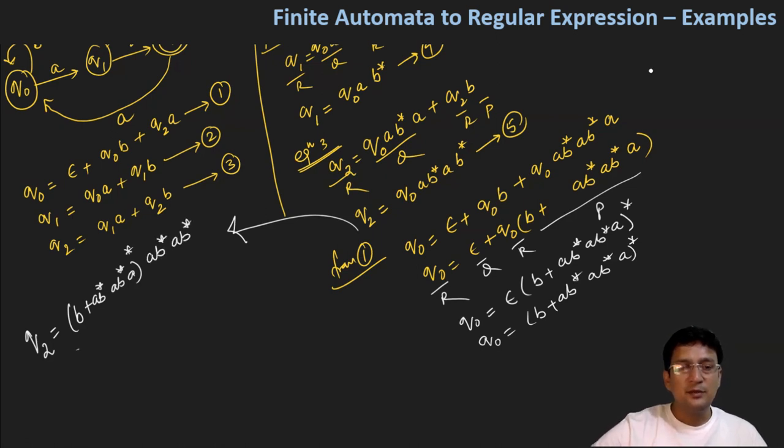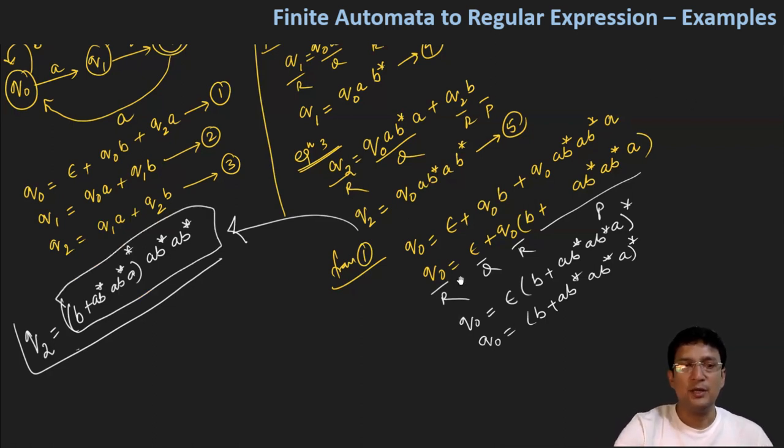So this is Q2, and since Q2 was the final state, then the regular expression will also be the same. It means whatever is the part in the right hand side, this will actually be the regular expression for the given finite automata. Thanks for watching this video.